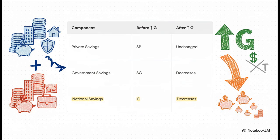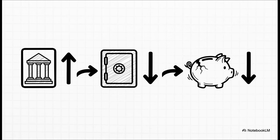Remember, national savings is made of two pieces: private savings — what we save — and government savings. So when government spending G goes up, but taxes T don't change, the government is simply saving less money, or more likely it's borrowing more. Either way, the entire pool of national savings shrinks. The chain reaction is crystal clear: the government spends more, that directly causes government savings to fall, and that in turn shrinks the entire supply of savings available in the economy for everybody else.